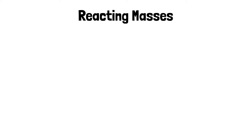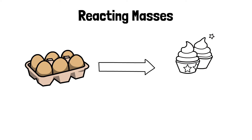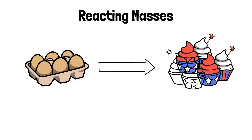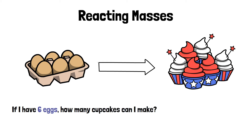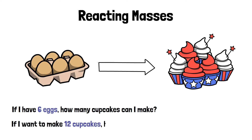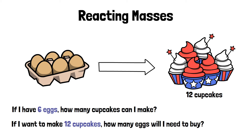You can think of reacting masses calculations as a bit like the chemistry version of recipes for baking cupcakes. You might ask yourself: if I've got six eggs, how many cupcakes am I going to be able to make? You've got a set number of ingredients and you want to know the maximum product you can make. Or you might know you want to make 12 cupcakes and need to figure out how many eggs to buy. Reacting masses calculations are basically the chemistry version of this question.